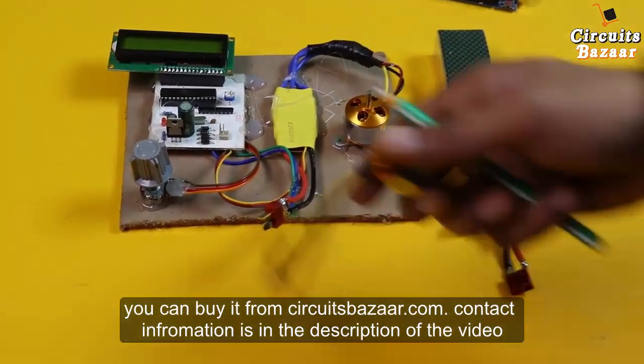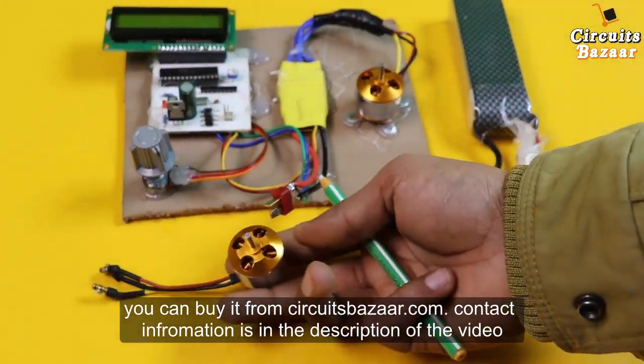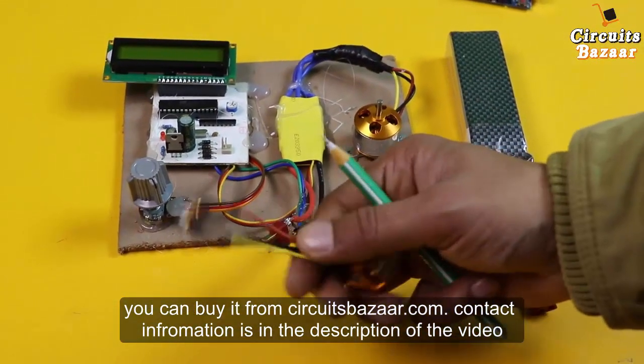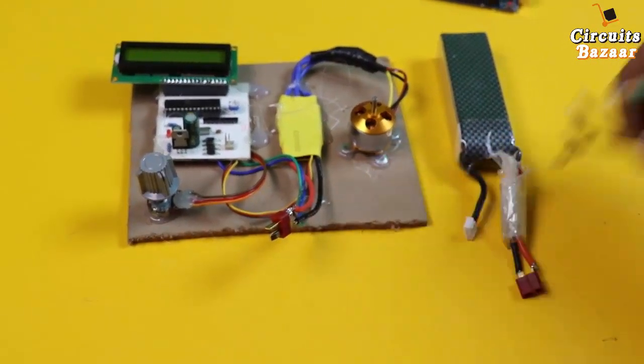Now, this is the BLDC motor. We've used this BLDC motor. It has three pins. And then this is the ESC.